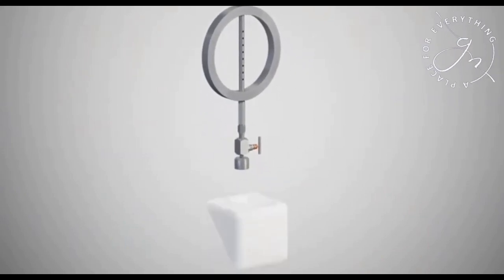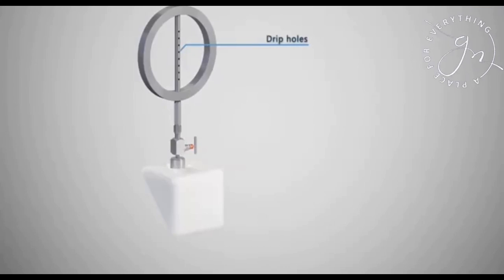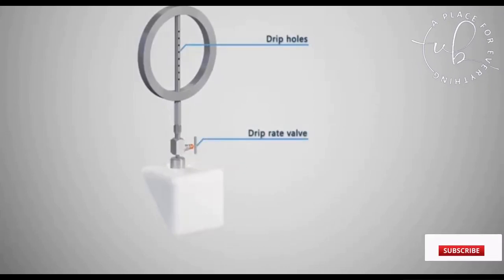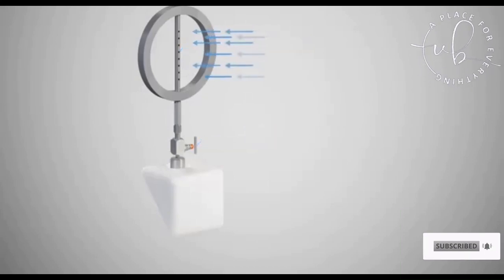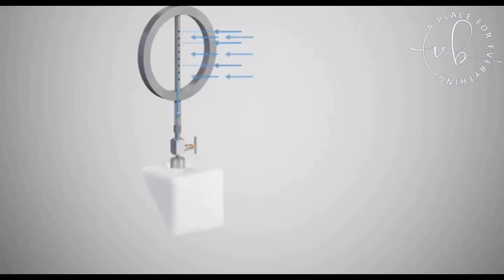To collect a sample of fuel, a cubitainer must be attached to the bottom of the drip sampler. As the fuel passes along the transfer pipe, some of it is collected by the holes in the drip sampler, flowing down and into the cubitainer.